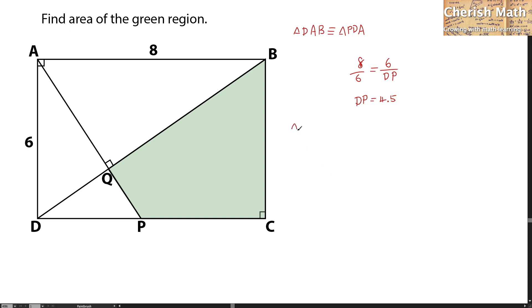Now, by referring to the same triangle DAB, I'm going to work out the length of DB by using the Pythagorean theorem. That is the square root of 8 squared plus 6 squared. So the length of DB that I'm getting is 10 units.